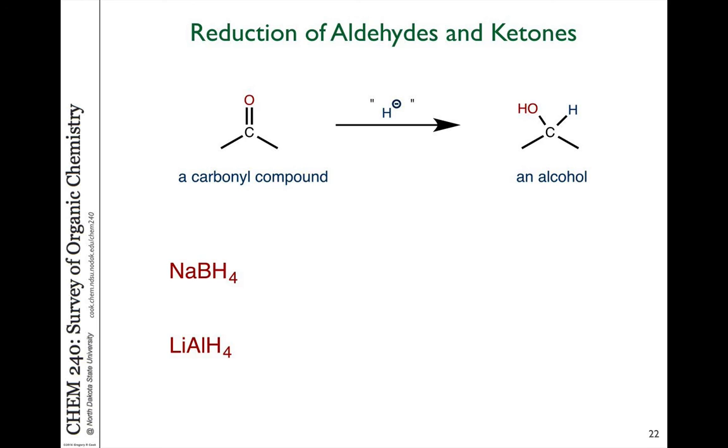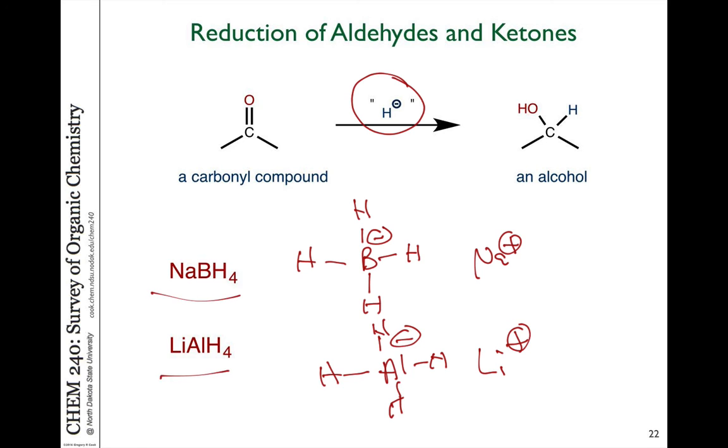Well carbonyl compounds can be reduced to alcohols also by the addition of an equivalent of H minus. And there are a couple of reagents which do that. As I mentioned before, we can't have H minus just floating around. But we can deliver hydrogen with its electrons if we use Lewis acid, Lewis base salts of things like boron. If we take BH4, which has a minus charge, and then the sodium cation, or aluminum, which is right below it on the periodic table, this also has a minus charge. Lithium aluminum hydride or sodium borohydride are very good reagents which provide a source of H minus.